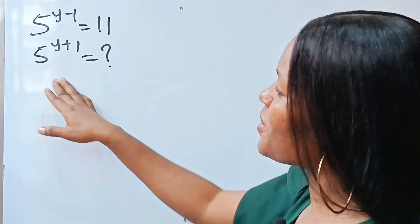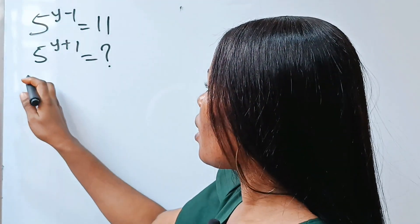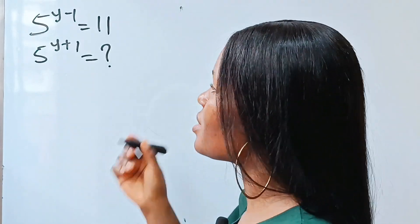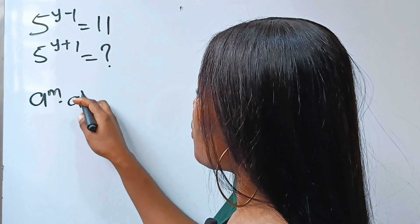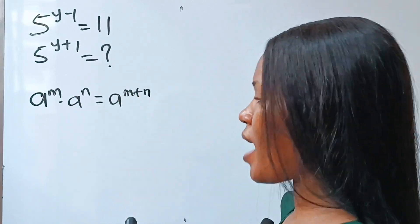So the equation says to solve for 5 to the power of y plus 1. Let's use the law of indices or exponents that states that a to the power of m multiplied by a to the power of n is equal to a to the power of m plus n.